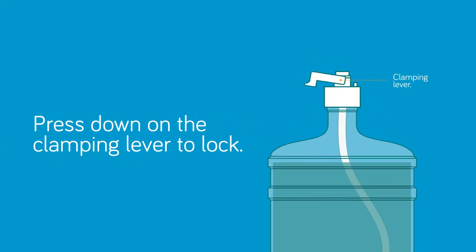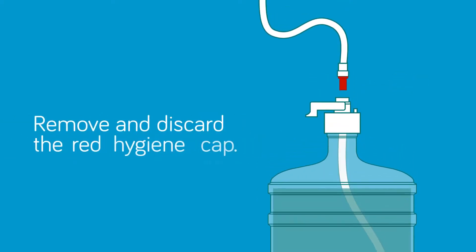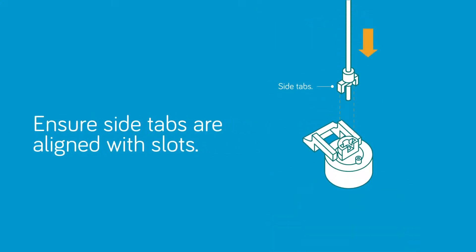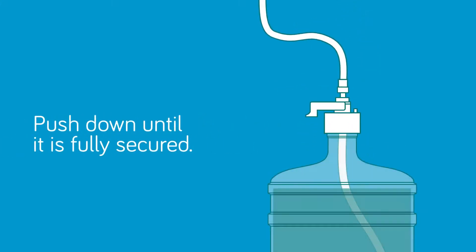Press down on the clamping lever to lock. Then remove the red hygiene cap from the upper cartridge tube and discard. Ensure the side tabs are aligned with the slots. Push down until it is fully secured.